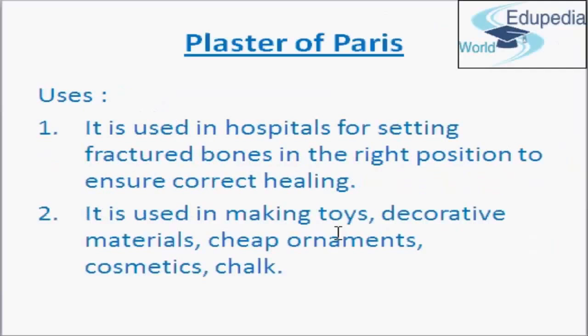Now uses of plaster of Paris: it is used in hospitals for setting fractured bones in the right position to ensure correct healing. It keeps the fractured bone straight. When plaster of Paris is mixed with proper quantity of water and applied around fractured limbs, it sets into a hard mass and keeps the bone joints in a fixed position. The second use is it is used in making toys, decorative materials, cheap ornaments, cosmetics and chalk.